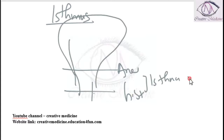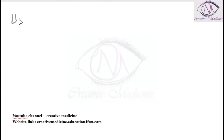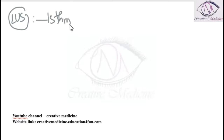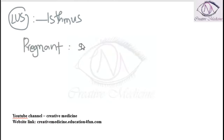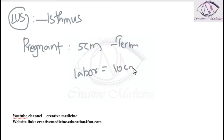The lower uterine segment in pregnancy is formed by the Isthmus. In the pregnant female, the lower uterine segment at term is 5 cm, and at the time of labor it is 10 cm. This lower uterine segment is identified by a loose fold of peritoneum.